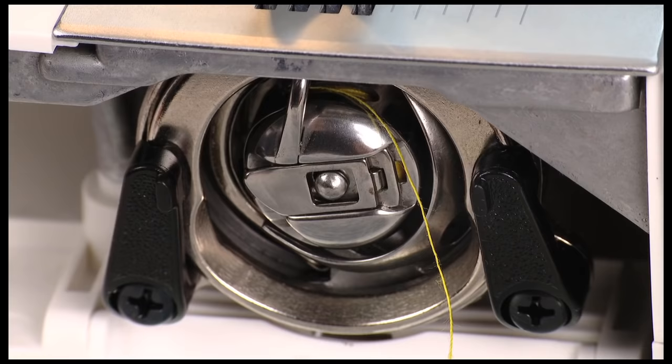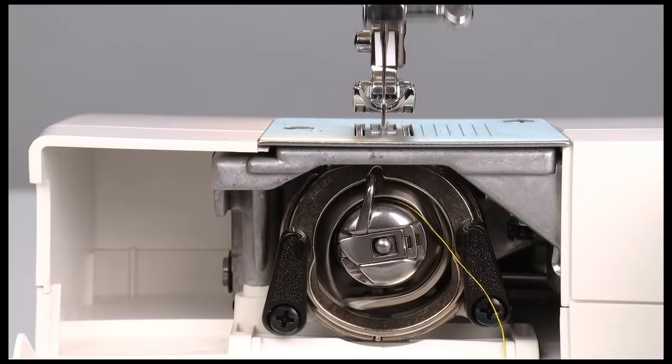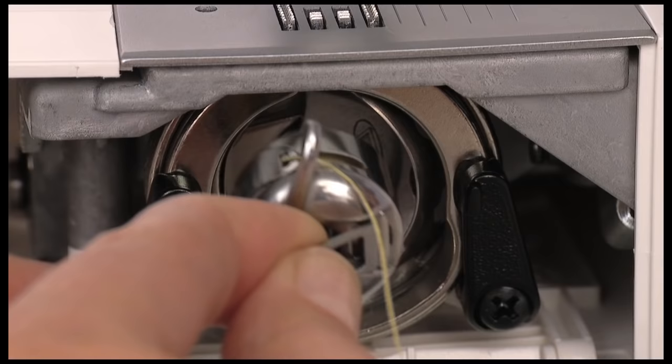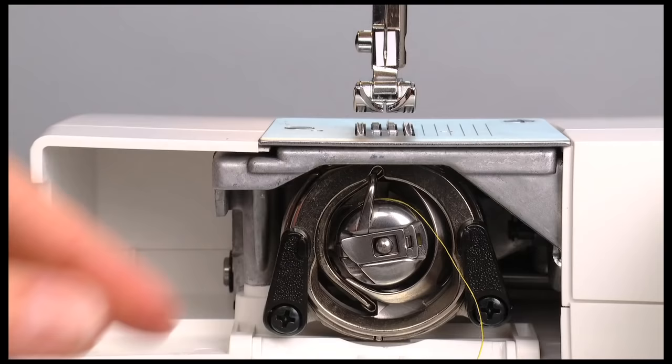To check that the bobbin case has been properly installed, slowly turn the handwheel toward you. The needle should move up and down without hitting the bobbin case. If the needle hits the bobbin case, or if the bobbin case starts falling out of the shuttle, remove the bobbin case completely and reinsert it.